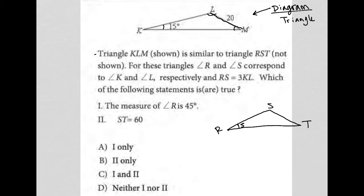For these triangles, angle R and angle S correspond to angle K and angle L respectively. RS is 3 times KL. So I'm just going to say KL is equal to X. And therefore, RS is going to be 3X long.